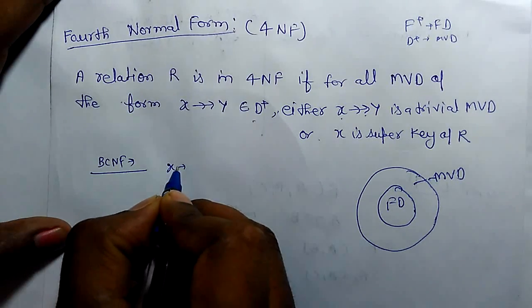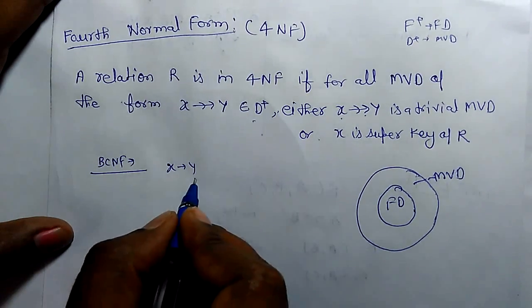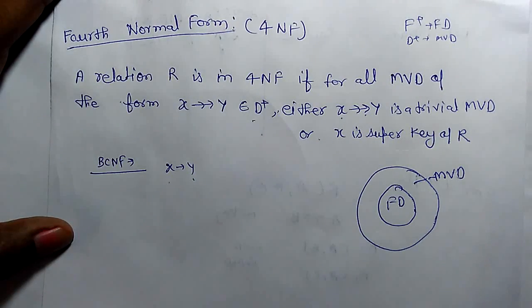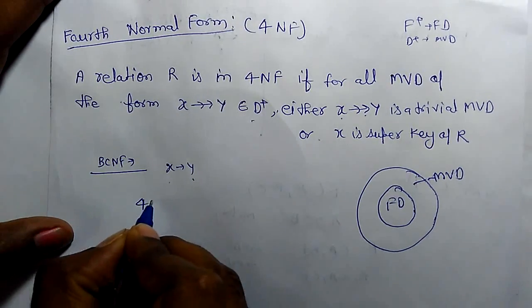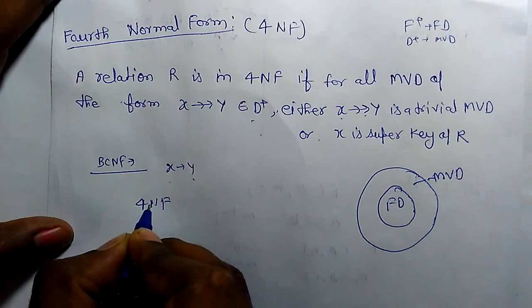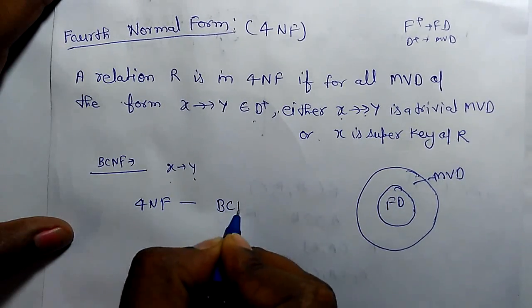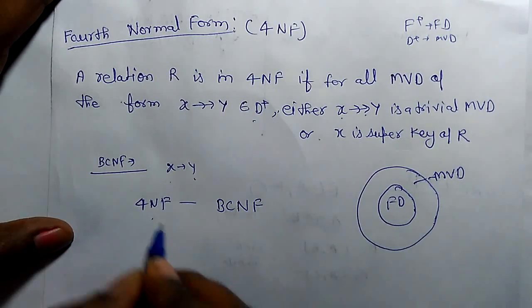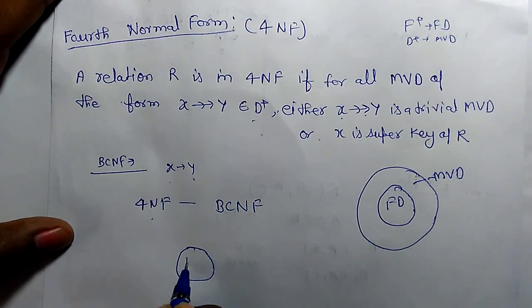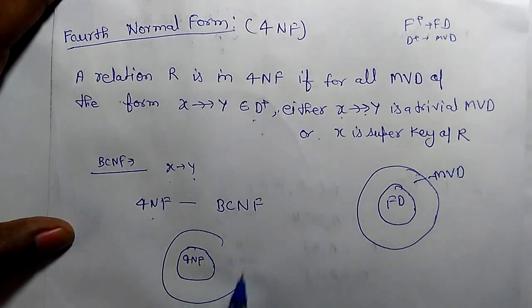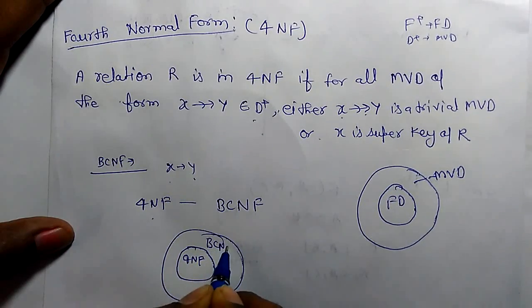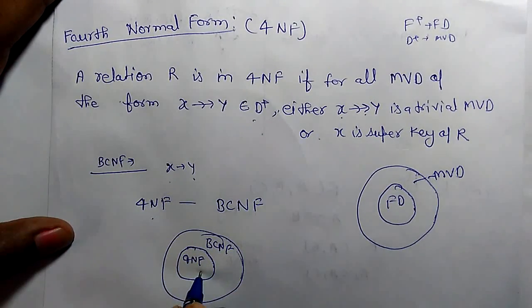And we know 4NF implies BCNF, but 4NF is a more stronger form of BCNF. So if a relation is in 4NF, it means it is already in BCNF.